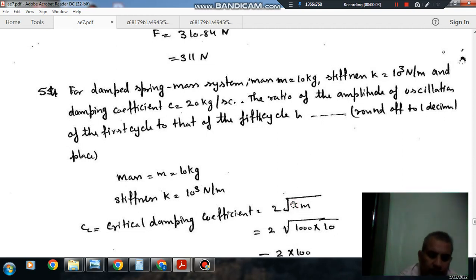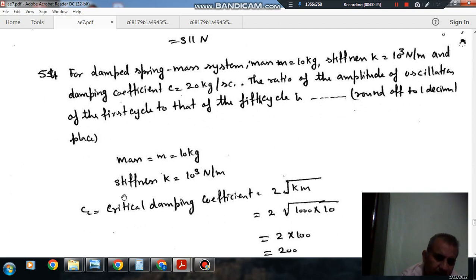Hello, welcome again. We are solving GATE 2019 Aerospace Engineering paper. Question number 54 is for a damped spring-mass system: M is equal to 10 kg, stiffness is equal to 10³ N per meter, and damping coefficient C is equal to 20 kg per second. The ratio of amplitude of oscillation of the first cycle to that of the fifth cycle is dashed, round off to 1.0.